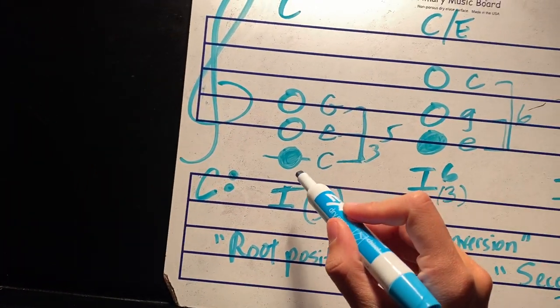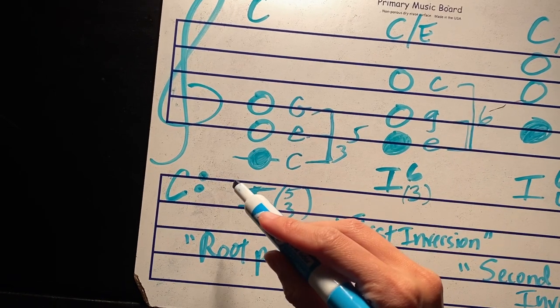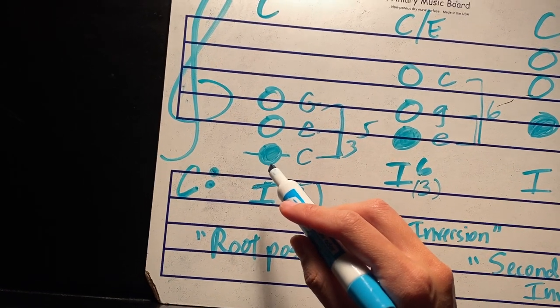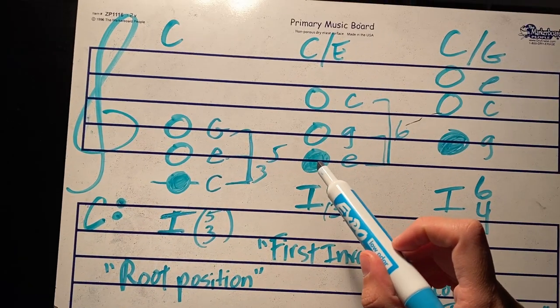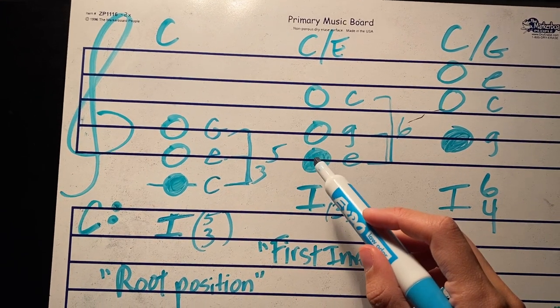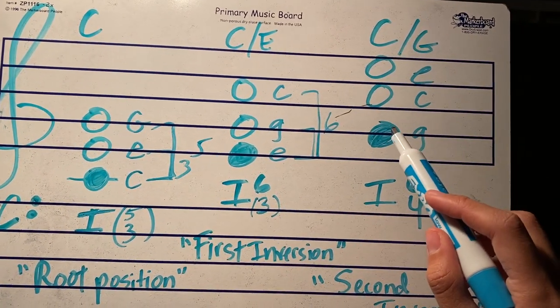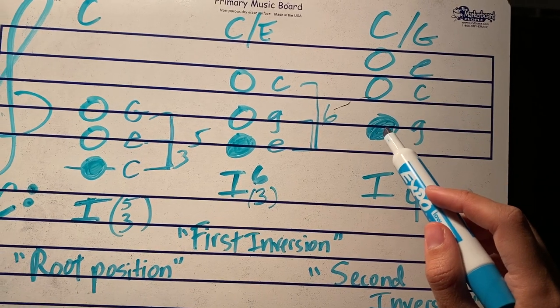And so basically, it's root position if the scale degree number one is on the bottom, it's a first inversion chord if the third degree of the scale is on the bottom, and then it's a second inversion chord if the fifth degree of the scale is on the bottom.